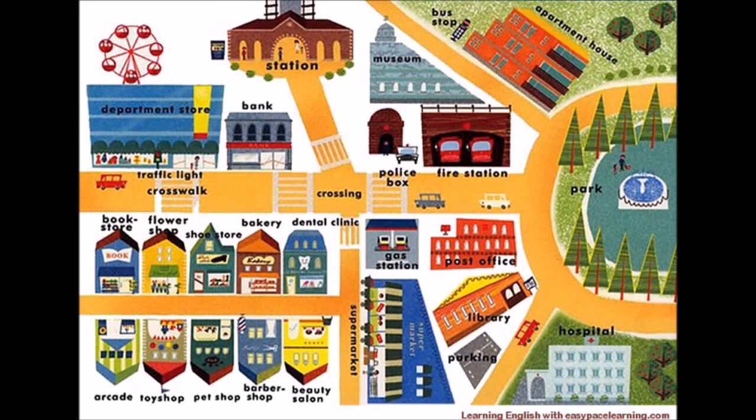Here are some places around town you can see in this picture. This is how you will learn the names of all the different places there are in your town or city. On the top right you can see an apartment house — this is where families or people live. Below the apartment block you will see a park, where people go to play, and below the park you will see a hospital, where sick people or people who have been in an accident go. There's also a post office, which is where you go to send your letters. A gas station is where you fill your car with petrol. A library is where you go to read books but not buy them.